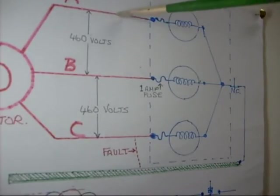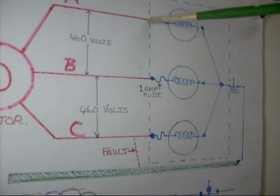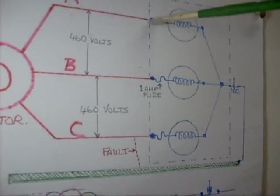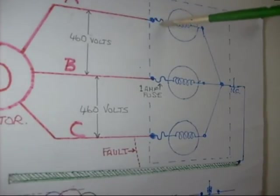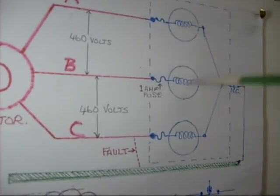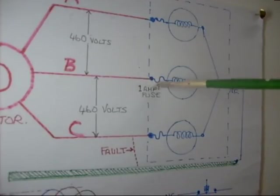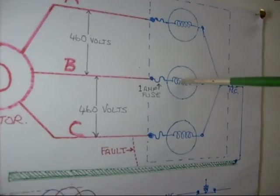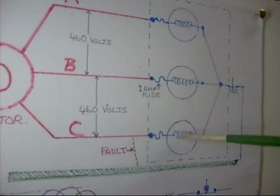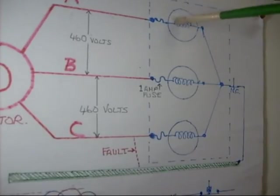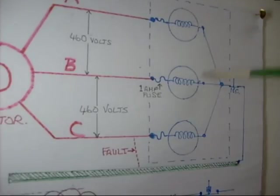The way this box interacts with these lines of electricity. Is you take line. Line number A. Phase A. Connected through a 1 amp fuse. To one side of the LED lamp. Same with phase B. Goes through a 1 amp fuse. And connects to one side of the LED. Same with phase C.